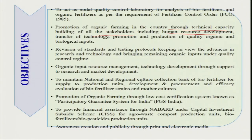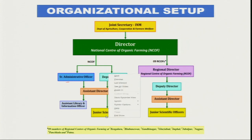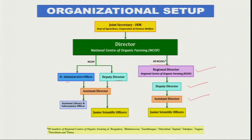NCOF maintains the national agricultural collection bank of biofertilizers and also promotes the Participatory Guarantee Scheme as a very easy certification process. Looking at the organizational structure, the apex post is the Joint Secretary of the Department of Agriculture, Cooperation and Farmers Welfare, followed by the Director of NCOF. Under the Director are a Senior Administrative Officer, Deputy Director, and Junior Scientific Officer. There are also 9 regional centres for organic farming under NCOF Ghaziabad, and every centre has a Regional Director, Deputy Director, Assistant Director, and Junior Scientific Officer. Through this hierarchy, organic farming is being promoted throughout different parts of India.